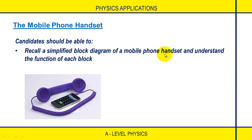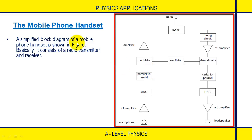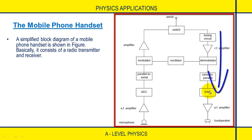Over here we have such a block diagram, and we are going to discuss the function of each one of them. It's important to realize from the very start that a mobile phone handset serves as both a radio transmitter and a receiver. On this section we consider the handset being used as a transmitter, and on this other side as a receiver.